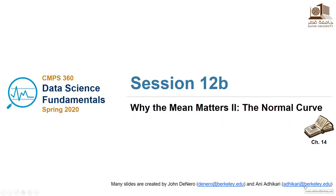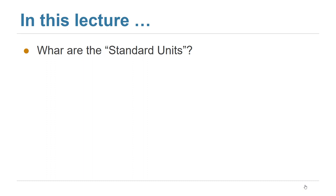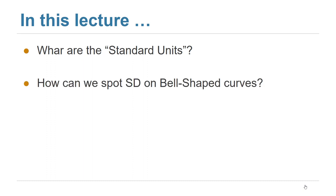Assalamu alaikum warahmatullahi wabarakatuh, bismillahirrahmanirrahim. This is the second lecture of session 12. We are still talking about why the mean matters. In the first lecture, we talked about what we mean by the average and the standard deviation. In this lecture, insha'Allah, we will cover multiple questions: what do we mean by standard units, how can we spot the standard deviation on bell-shaped curves, and finally, we will discuss the central limit theorem and why it is important.